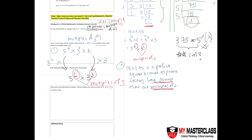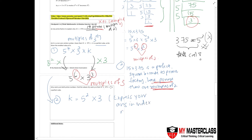Step 2: this means k equals 5 to the power of 2 times 3. But this is not necessarily the final answer. If the question asks you to express your answer in index notation or prime factors, leave it in that form. Otherwise, press your calculator to evaluate k numerically, since the question is asking for the value of k.